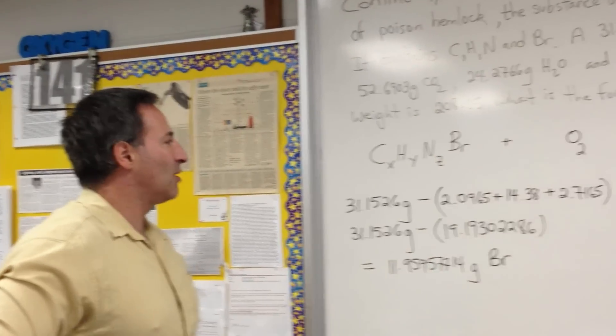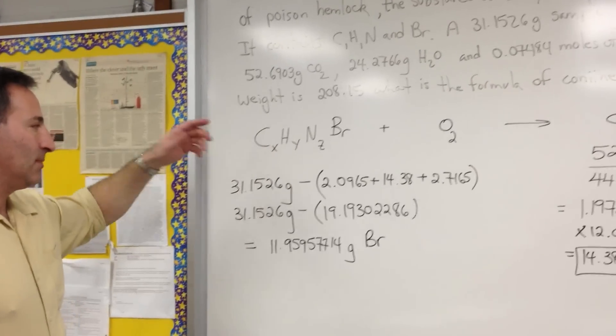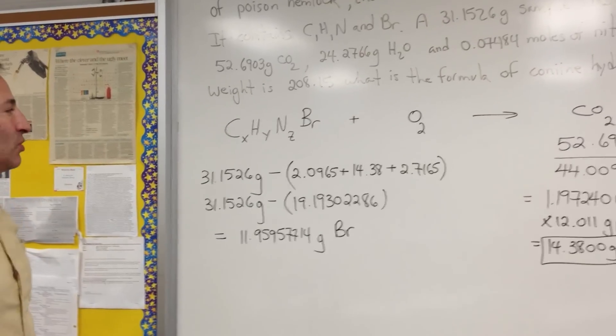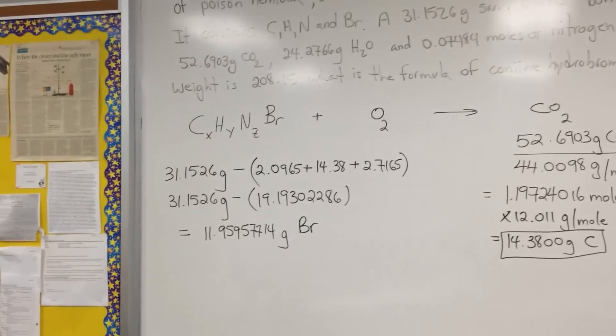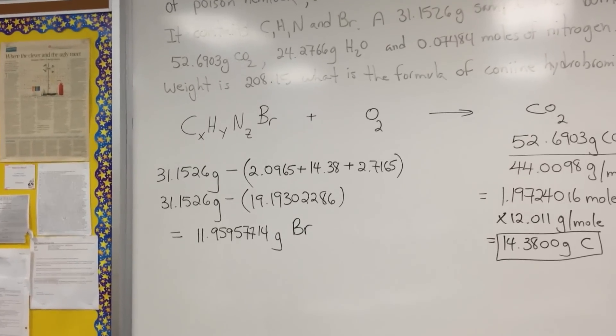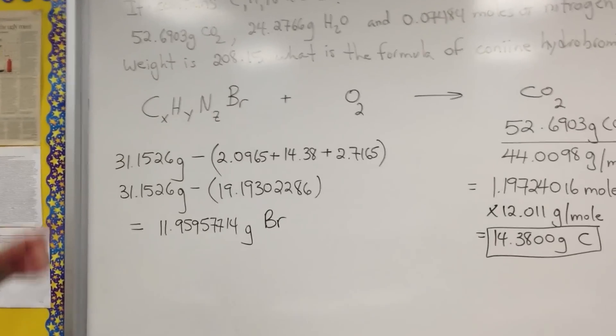To set this problem up, we first begin by putting X, Y, and Z for the carbon, hydrogen, and nitrogen, because we don't know what the coefficients are, how many of these atoms are in each molecule. There's also bromine. I didn't put a letter on that one because we'll see later on why.